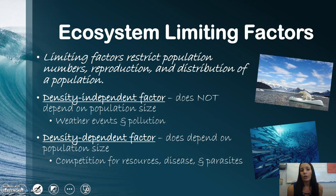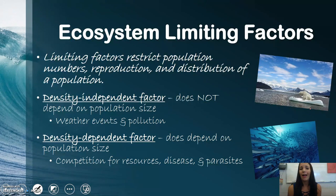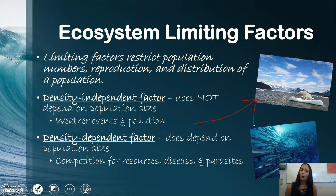Ecosystem limiting factors restrict your population numbers, reproduction, and overall distribution of that population. There are two kinds. A density independent factor happens regardless of your population size or density — things like weather events and pollution. Looking at the polar bear and global warming example, it doesn't matter whether the polar bear population is two or two hundred — they're still going to be affected.